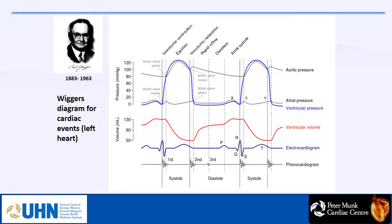First of all, we have to define what systole and diastole are. This definition is based on Wigger's Diagram. It shows that systole starts with mitral valve closing. The pressure inside the LV goes up but the volume does not change — this is called isovolumic contraction time, about 50 milliseconds. Then the aortic valve opens and it is ejection time — the time blood goes from LV to the aorta.